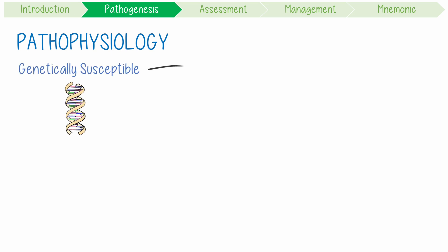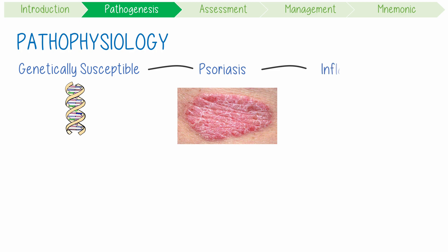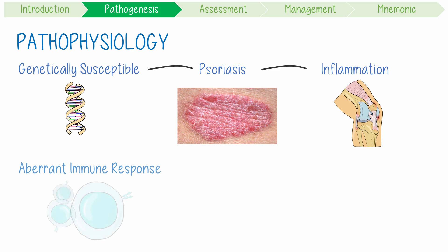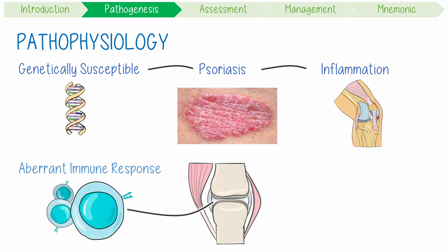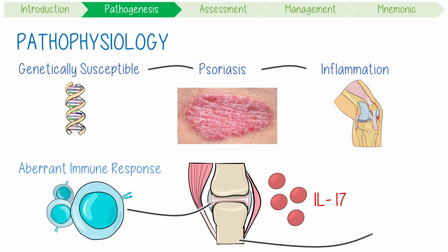Pathophysiologically, we think that genetically susceptible patients with skin psoriasis develop joint inflammation through a shared mechanism. They both seem to be driven by an aberrant immune response, and this inflammation is prominent in the synovium of involved joints, which is the specialized connective tissue membrane that lines the inner surface of some joint capsules. Via cytokines like IL-17, progressive irritation makes the synovium become more vascular and eventually results in extensive bone remodeling.